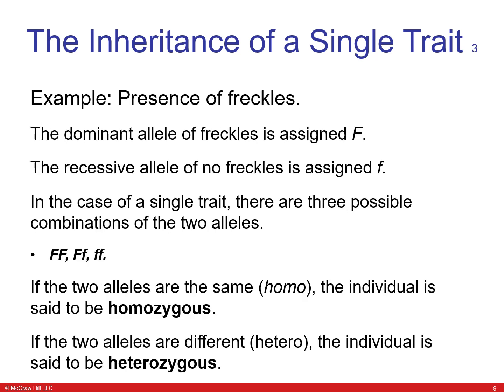For example, freckles: the dominant allele is assigned capital F and the recessive no-freckles allele is assigned lowercase f. For a single trait, there are three possible combinations of two alleles. If the two alleles are the same, the individual is homozygous. If the two alleles are different, the individual is heterozygous.